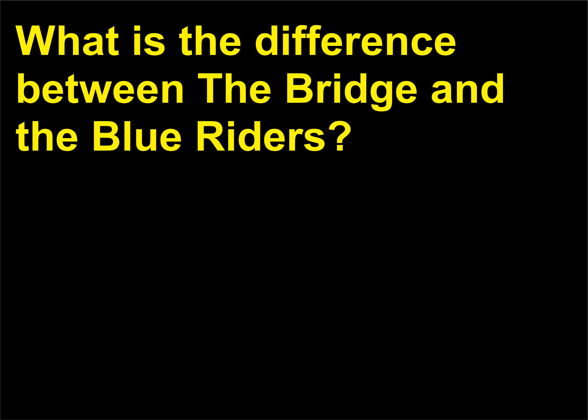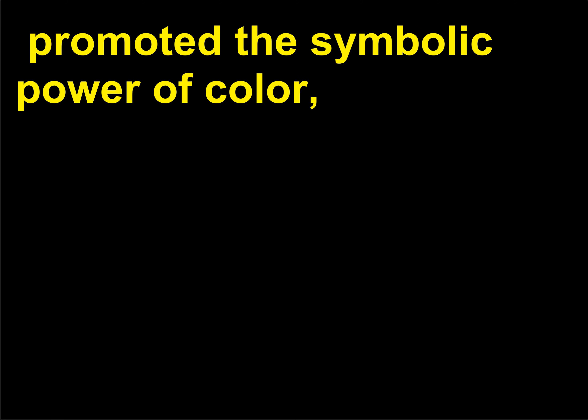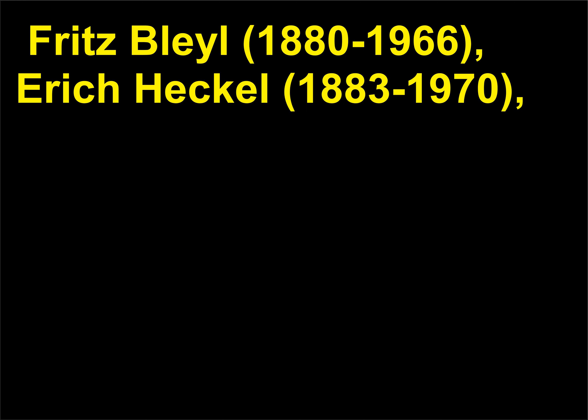What is the difference between the Bridge and the Blue Riders? The Bridge and the Blue Riders were both groups of German Expressionist artists who shared artistic values, promoted the symbolic power of color, and believed that art could communicate powerful positive or spiritual messages to the viewer. The Bridge, known in German as Die Brücke, was founded in Dresden in 1905 by four architecture students: Fritz Bleyl (1880–1966), Erich Heckel (1883–1970), Ernst Ludwig Kirchner (1880–1938), and Karl Schmidt-Rottluff (1884–1976).